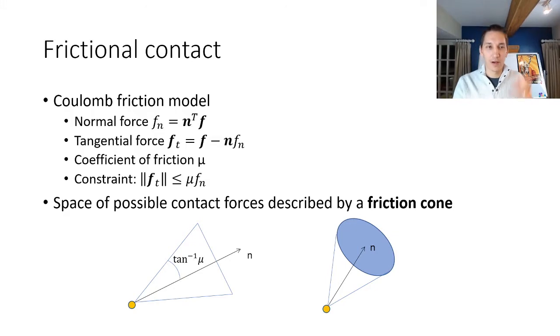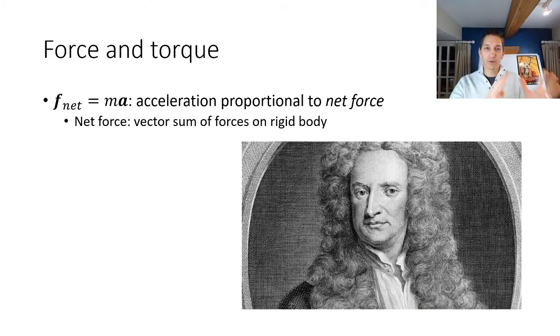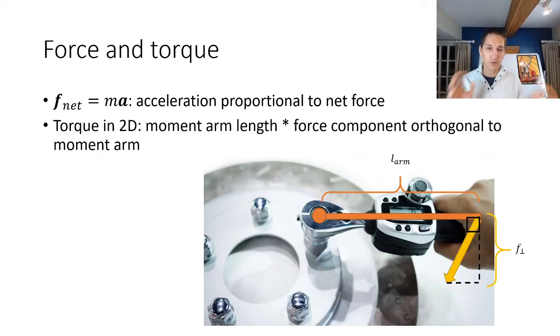With these two models, we can start to reason about how contact forces affect the movement of objects. To refresh you of high school physics, there's Newton's law, F equals ma, which tells you that force is related to mass and acceleration. In other words, the acceleration of a body is proportional to the net force that's acting on this body. For torques, the torque that an object feels in two dimensions is if you take the moment arm, the distance between the axis that you're representing that rotation and the point at which you apply the force, if you apply the force orthogonal to this moment arm, then the amount of torque that you have is the moment arm length times the magnitude of that force. If you're going to apply the force in a non-orthogonal direction, you're going to just take the orthogonal projection of that force component and multiply that by the moment arm length.